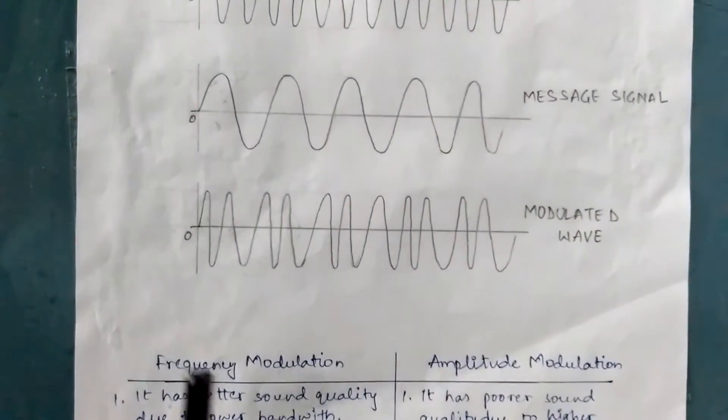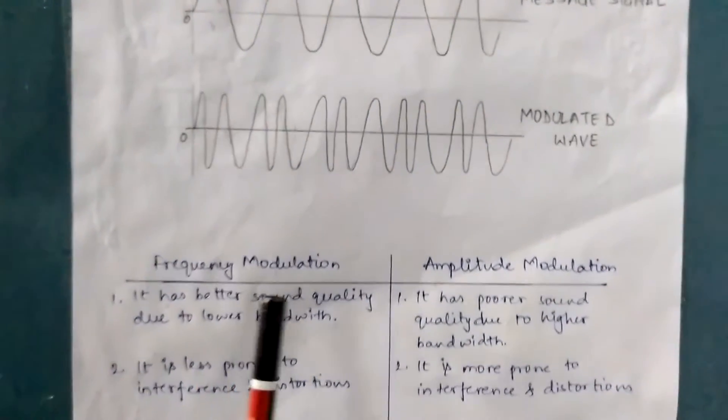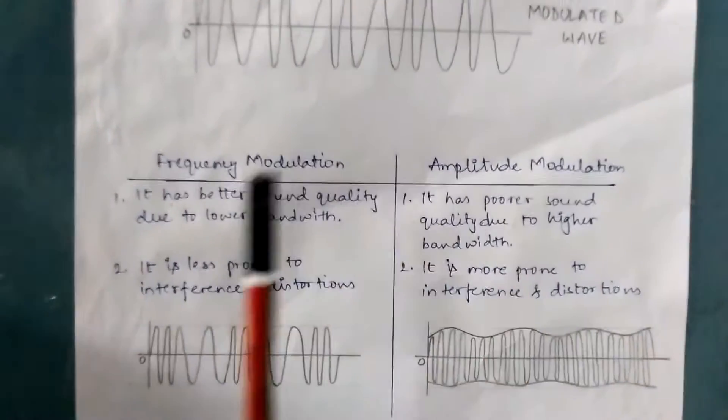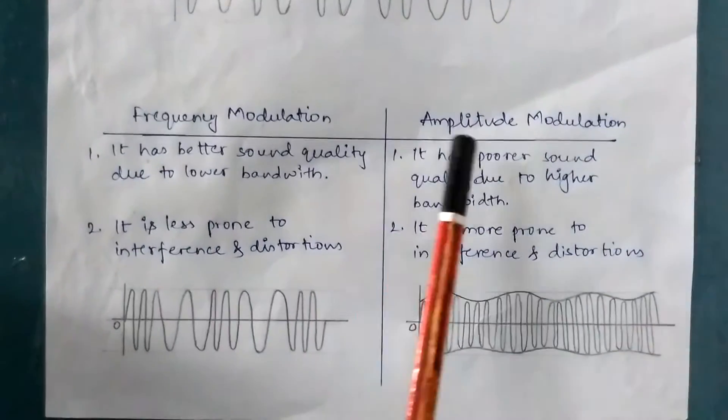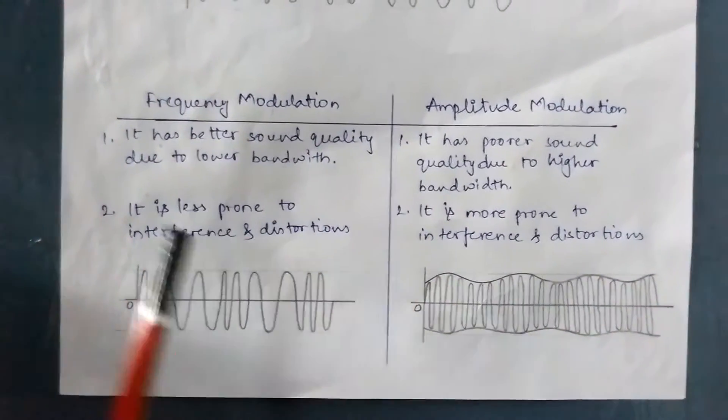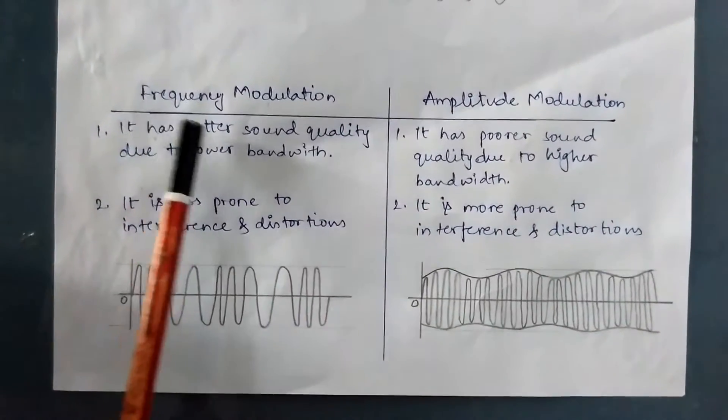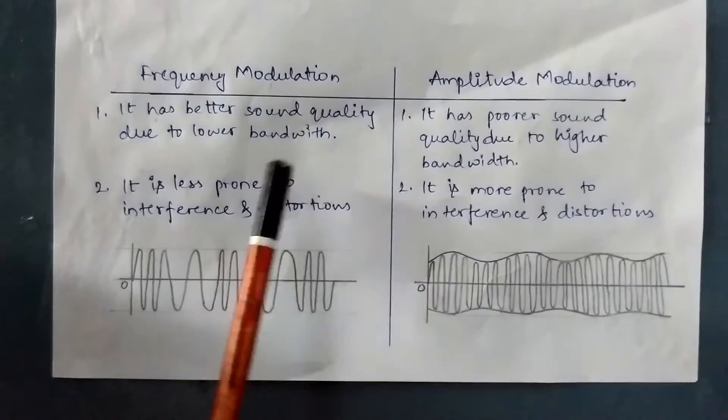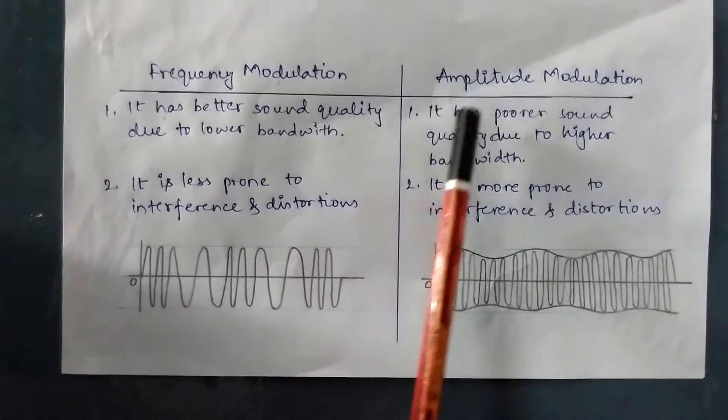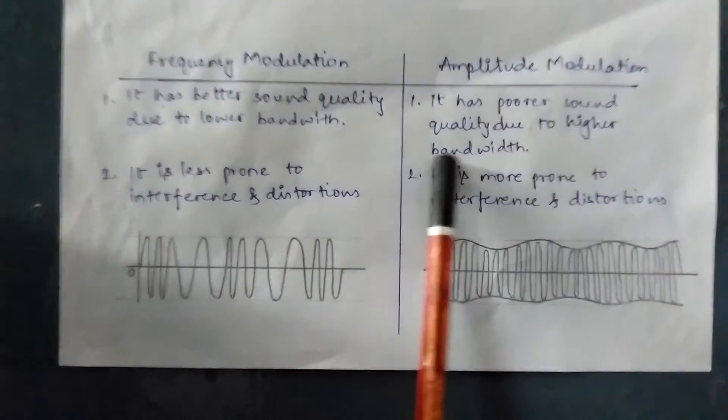We have other modulating techniques as well, such as amplitude modulation. But we prefer frequency modulation over amplitude modulation because frequency modulation has better sound quality due to lower bandwidth, and amplitude modulation has poor sound quality due to higher bandwidth.